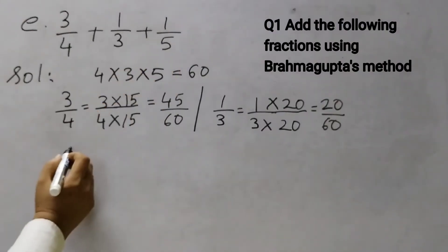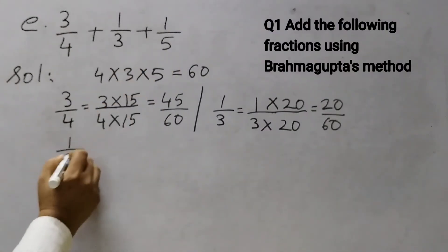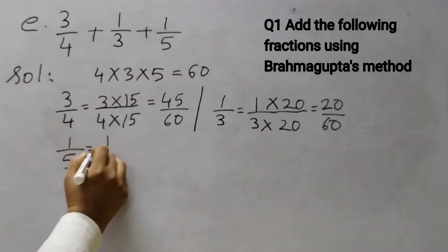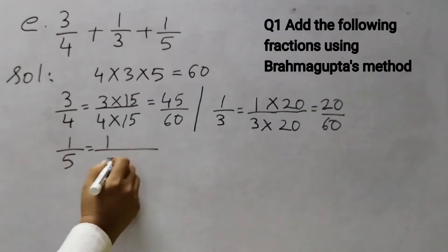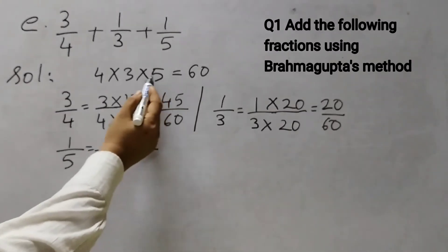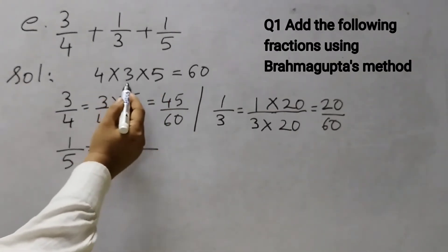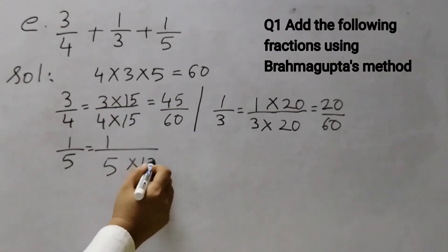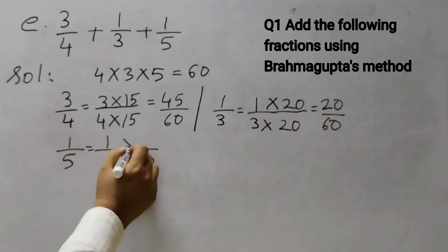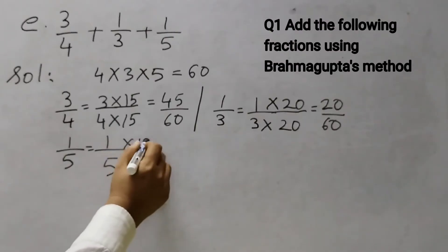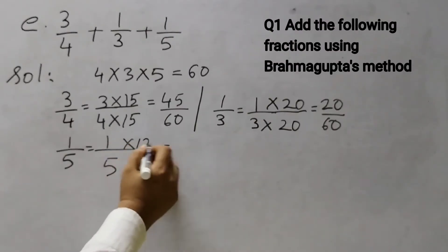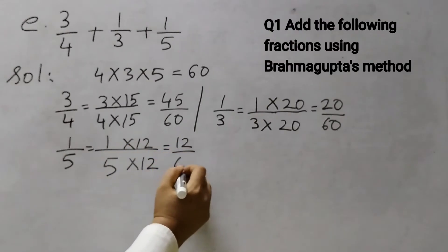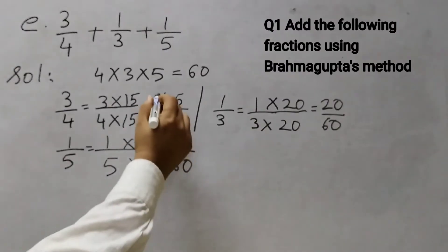Now 1/5. Same way you will find out the number — hide 5. So 4 × 3 = 12. 5 × 12 gives the denominator, and 1 × 12 = 12. So 1/5 becomes 12/60.